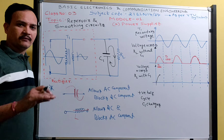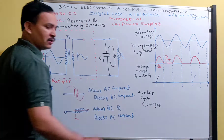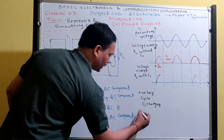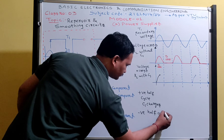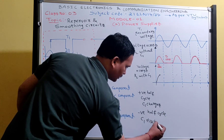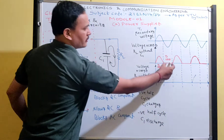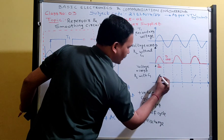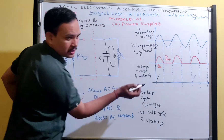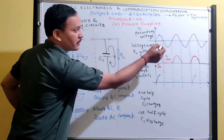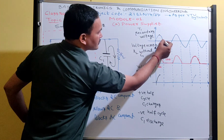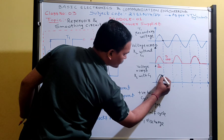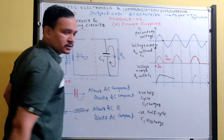The charging of a capacitor is very fast, but discharging is slow. This is due to the high value of load resistance — the higher the load resistance, the longer the discharge time of the capacitor. During the negative half cycle, capacitor C1 discharges. The capacitor charges to peak value; after the peak, the input voltage starts decreasing and approaches zero. At that instant, the capacitor also starts slowly discharging.